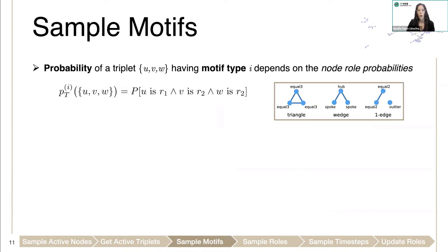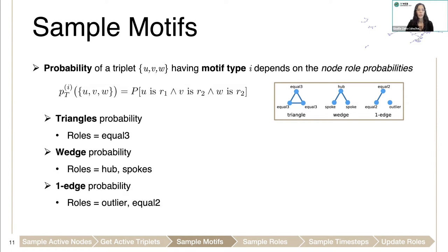The probability of a triplet having a motif type will depend on the node rule probabilities. So the probability of observing a triangle motif would depend on the probability that all three nodes have the equal three rule. Similarly, for a wedge motif, one node would be hub, the other two spokes. And for the one-as motif, one of the nodes outlier and the other two equal two roles.